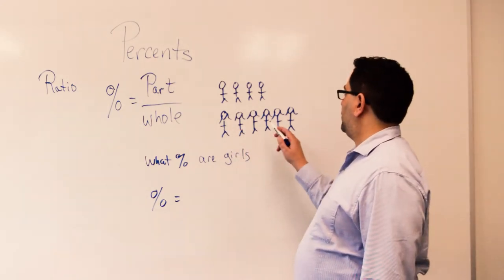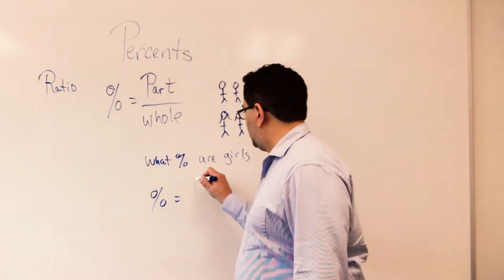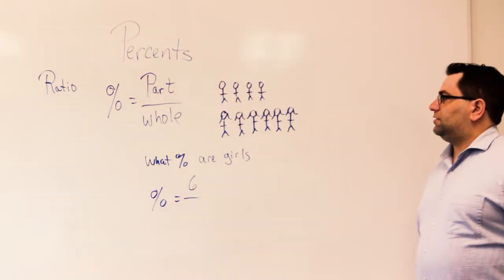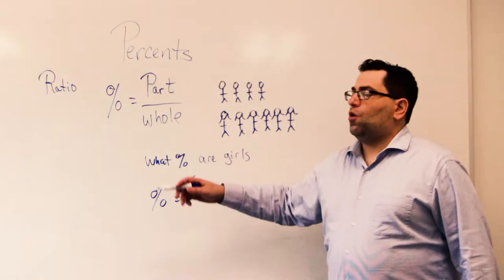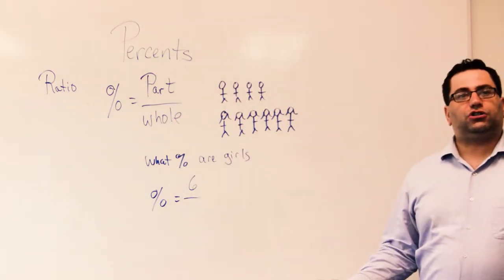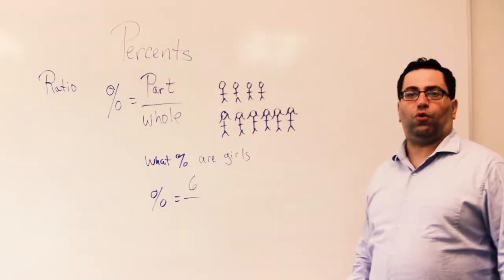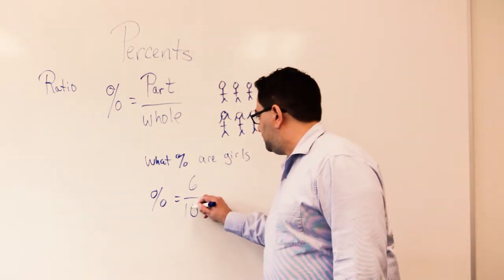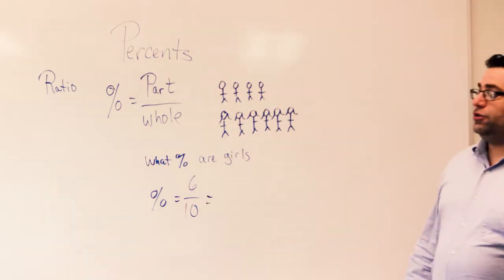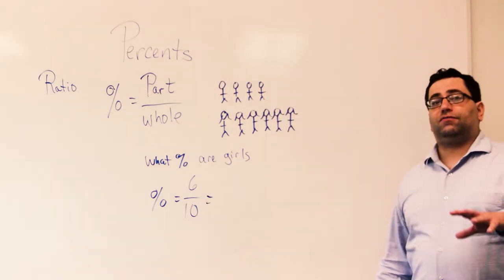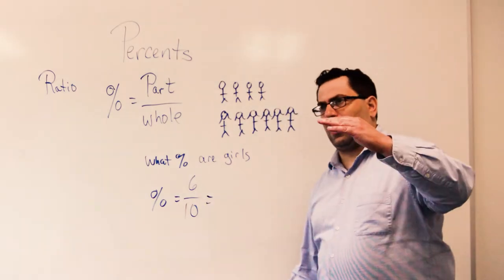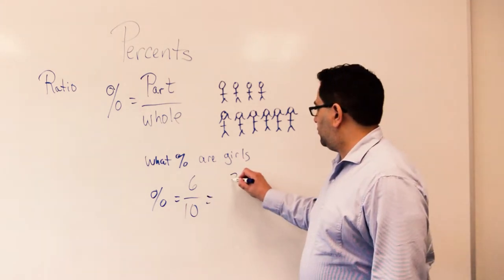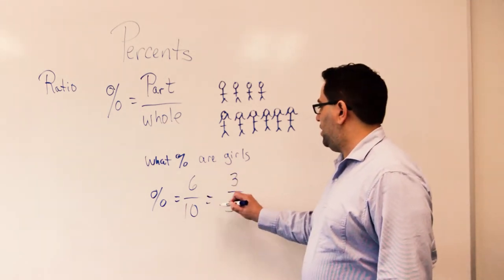I have one, two, three, four, five, six girls. And the whole — well, how many students do I have total? I have six girls, four boys, that's ten total. I can use a little bit of divisibility and divide the top and the bottom by two. I get three on top, five on the bottom.